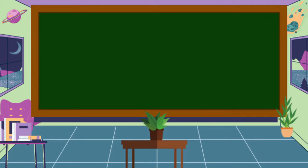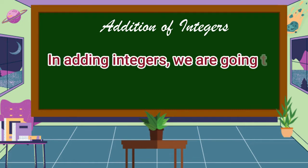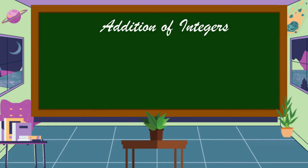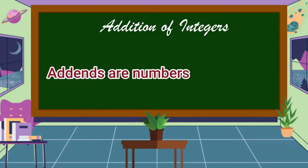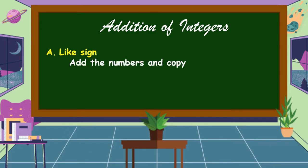First, we're going to discuss about addition of integers. In adding integers, we're going to look at the sign of the addends. Addends are the numbers to be added. If they have like signs or the same sign, add the numbers and copy the common sign.